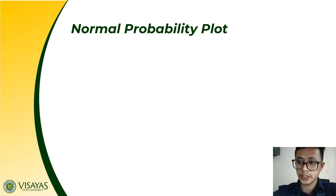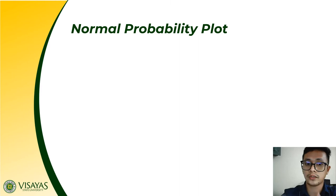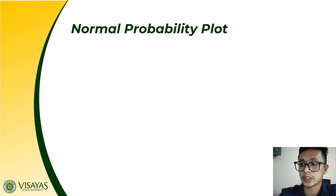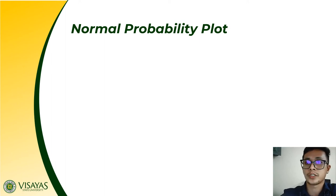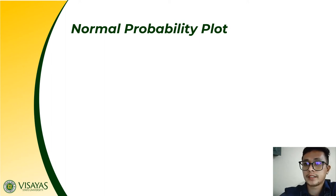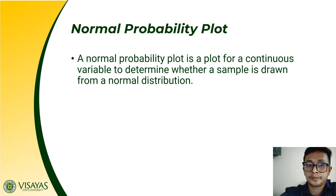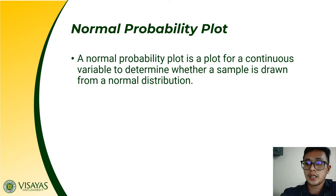Any questions before we proceed? So far we've covered basic plots using the plot function, and histograms using the hist function — including adding a curve line using the curve function to represent normal distribution. One can also create a normal probability plot. A normal probability plot is used for a continuous variable to determine whether a sample is drawn from a normal distribution.